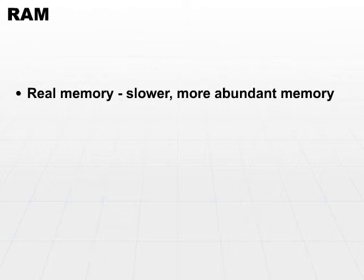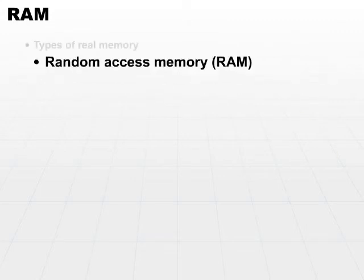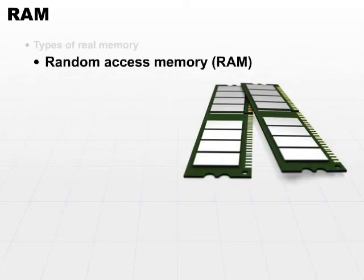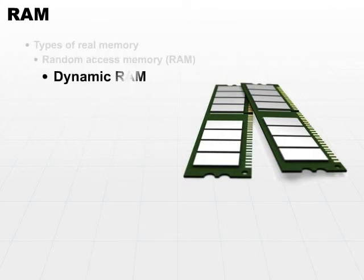So let's talk a little bit more about the different types of memory that we're likely to encounter. First off, there are two basic types of real memory: random access memory, and we'll discuss read-only memory in a few minutes. Random access memory has two basic types: dynamic RAM and static RAM.